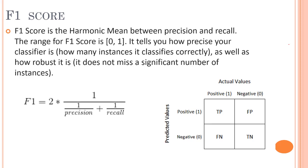The next metric is the F1 score. The F1 score finds the optimal blend of precision and recall — it is the harmonic mean rather than a simple average, because it punishes extreme values. For example, a classifier with a precision of 1.0 and a recall of 0 has a simple average of 0.5, but an F1 score of 0.